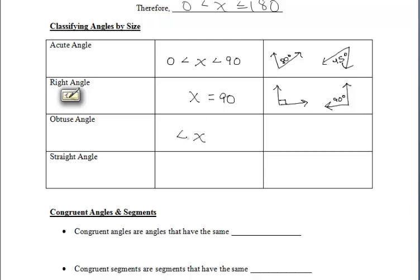An obtuse angle is an angle that is greater than 90 degrees but less than 180 degrees. Some examples of obtuse angles, they may look something like that. A 110 degree angle is an example of an obtuse angle, as well as a 125 degree angle.